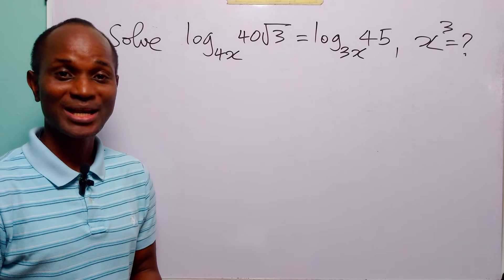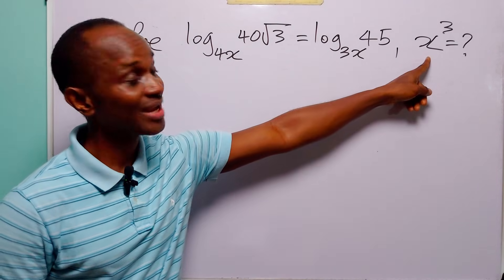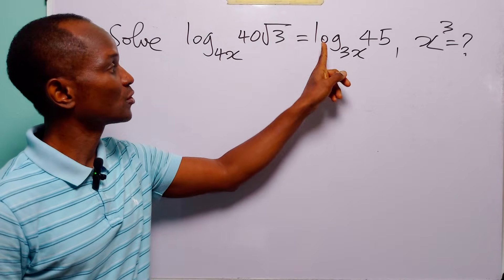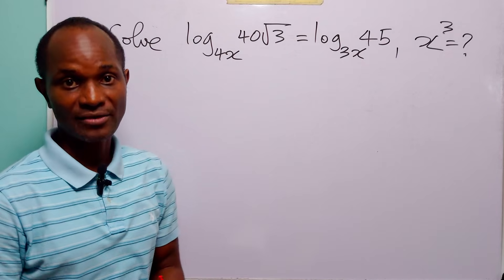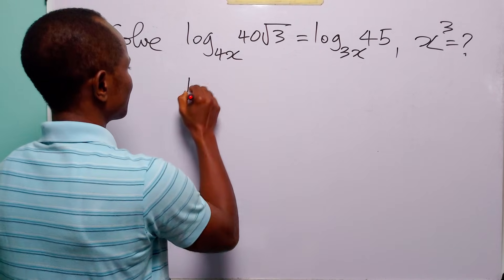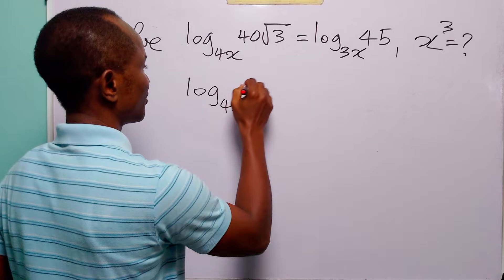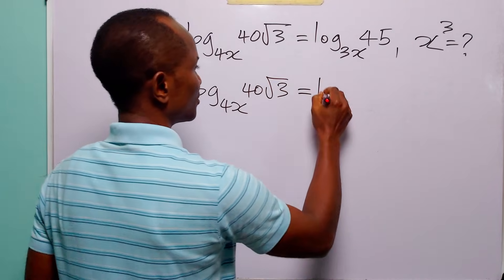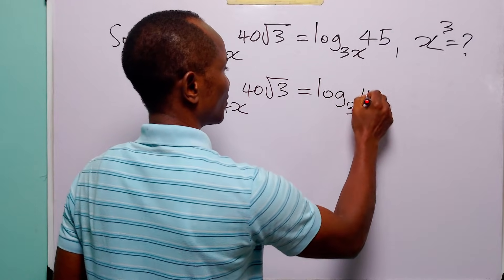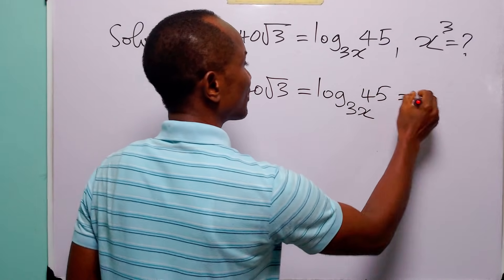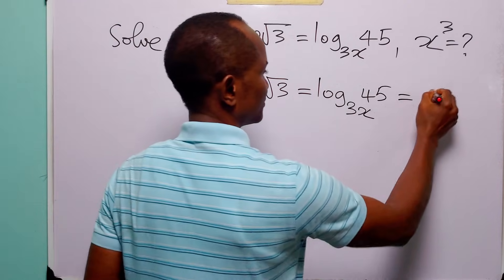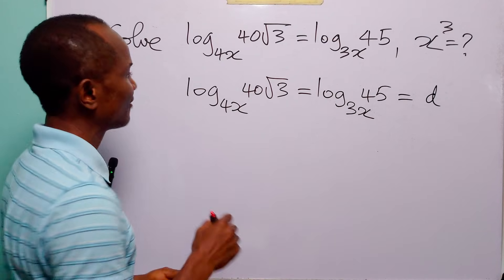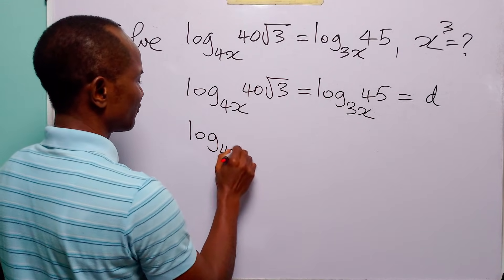Hello and welcome. In this math tutorial, our task is to find the value of x cubed, given that log base 4x of (40√3) is equal to log base 3x of 45. To solve this problem, let log base 4x of (40√3) and log base 3x of 45 both be equal to a constant d.